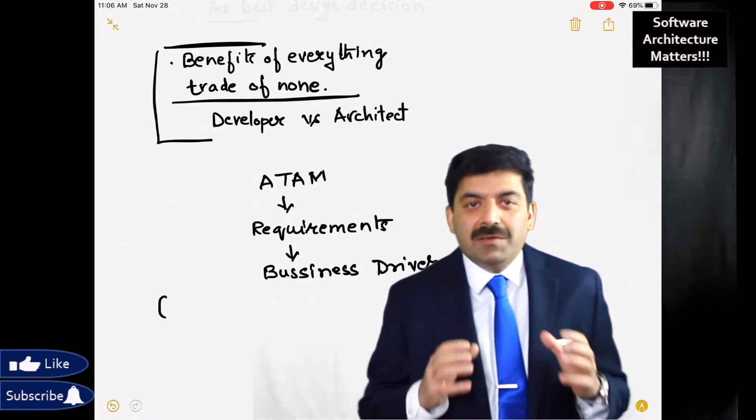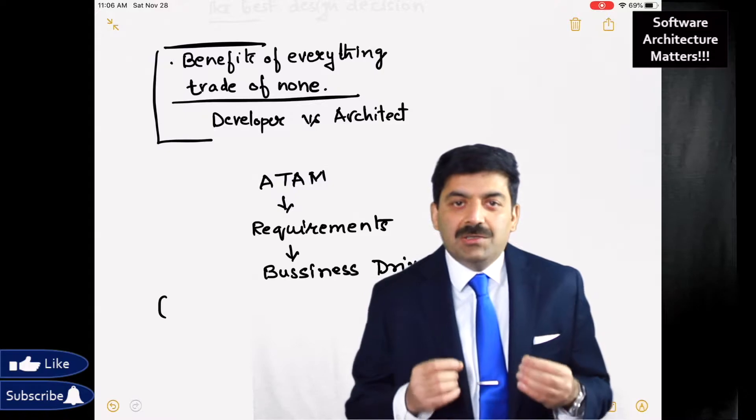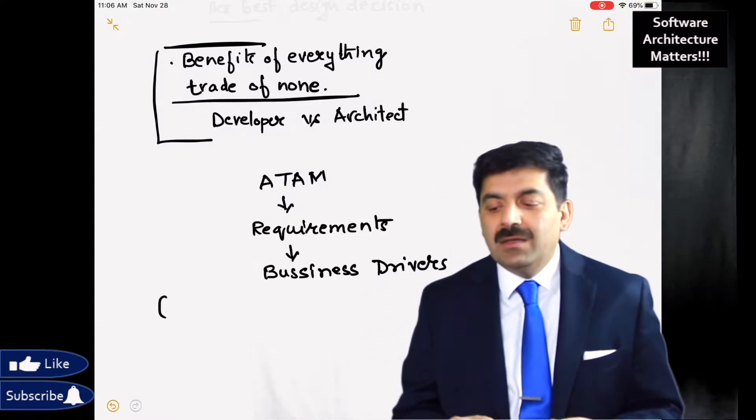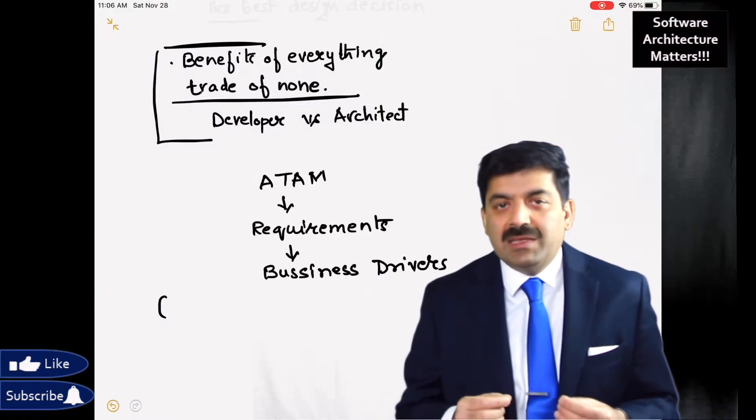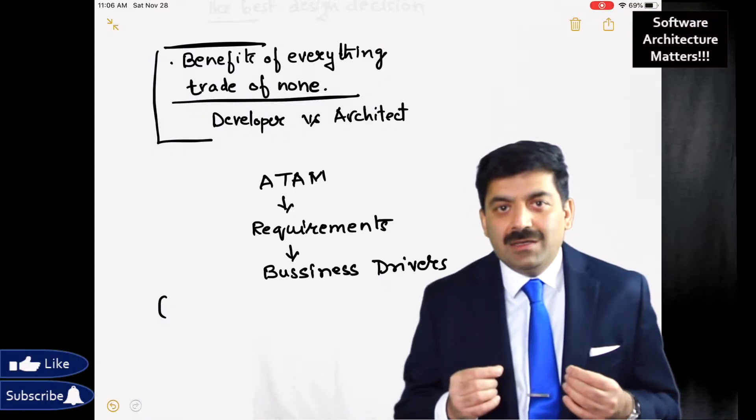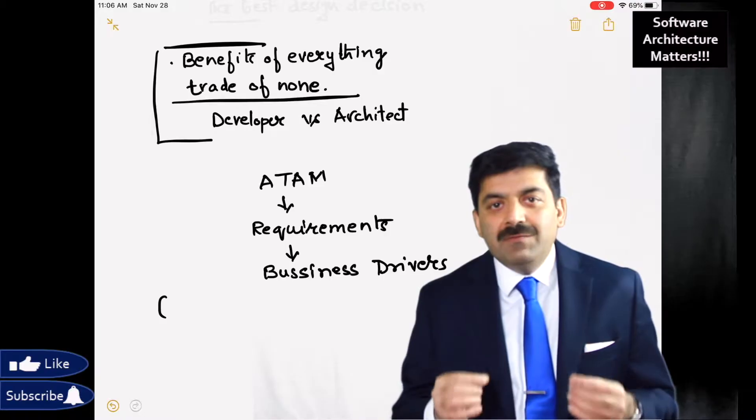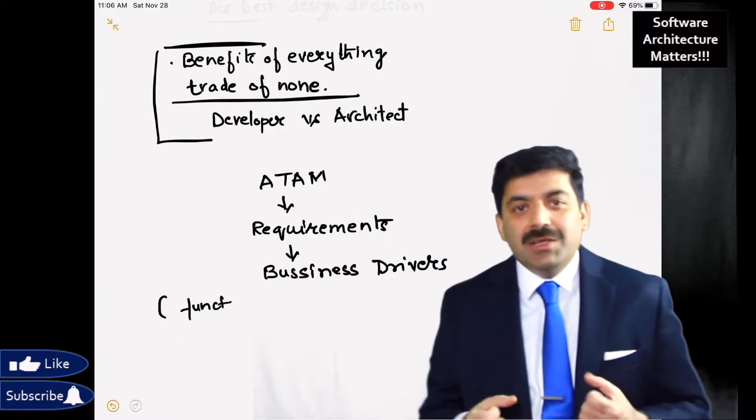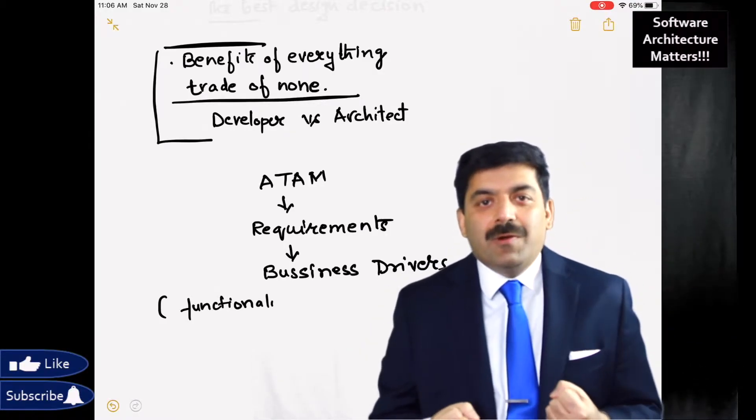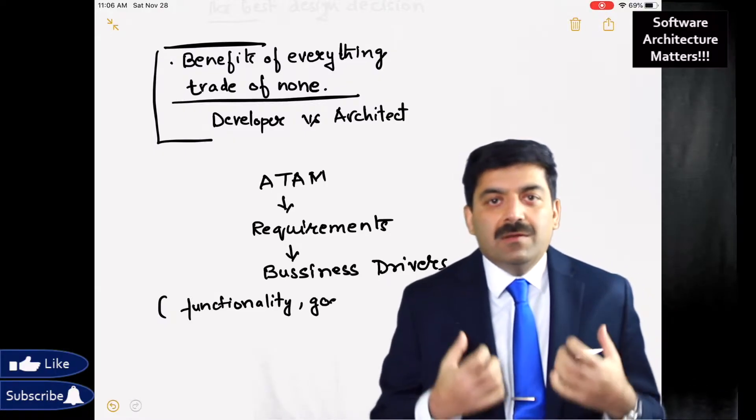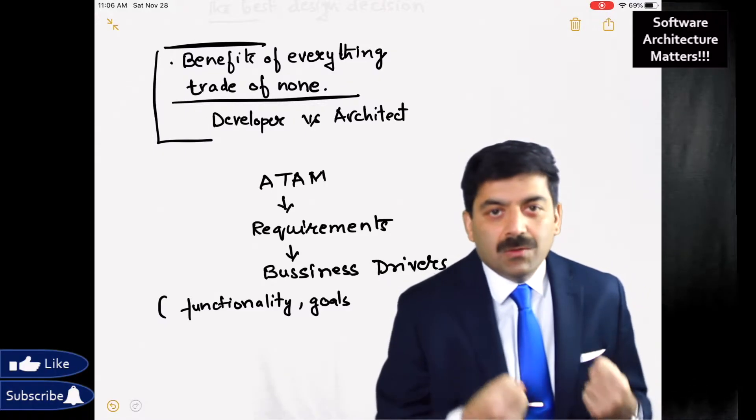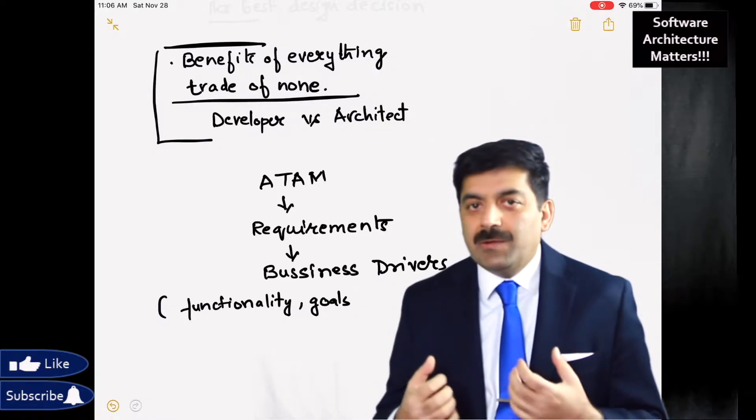Let's get into the definition of architectural trade-off analysis method. Architectural trade-off analysis method is a process in which you collect all the stakeholders, take the requirements from them. From the requirements, you find out what are the functional requirements, what are the goals, what are the non-functional requirements.